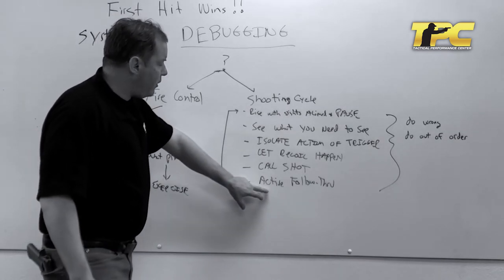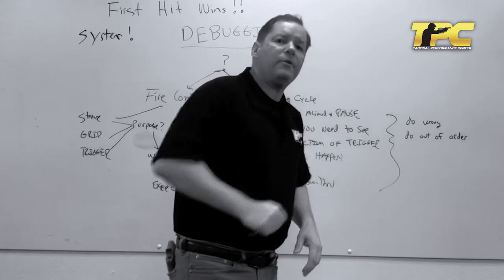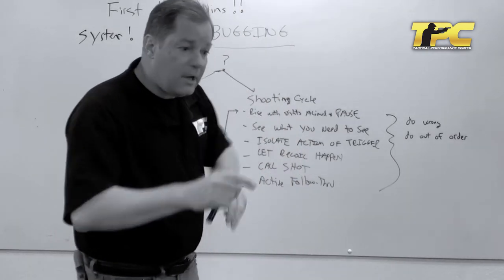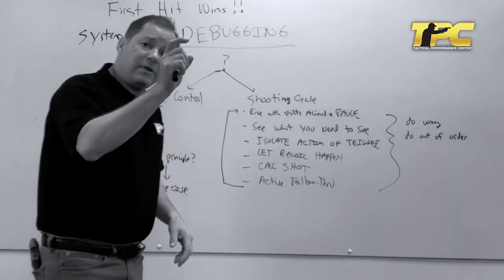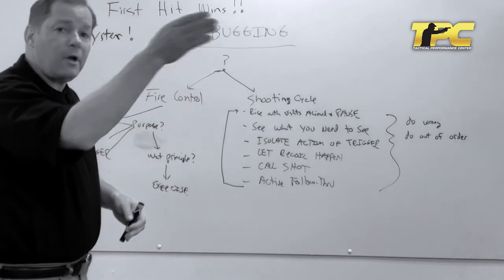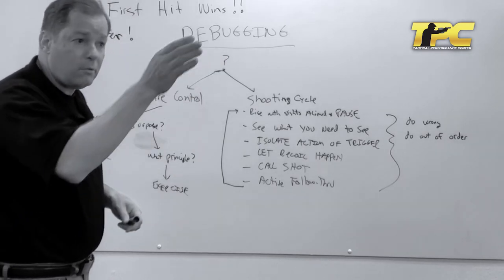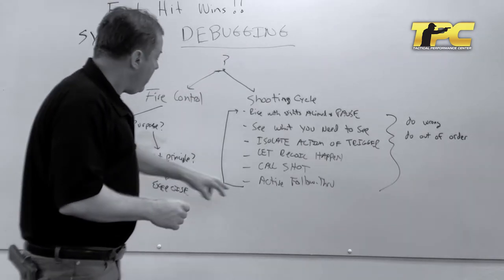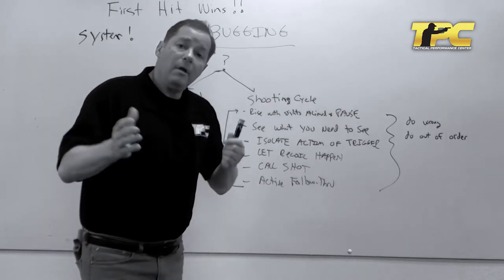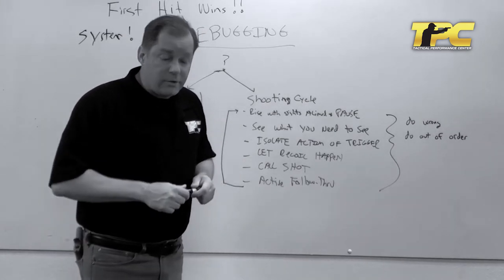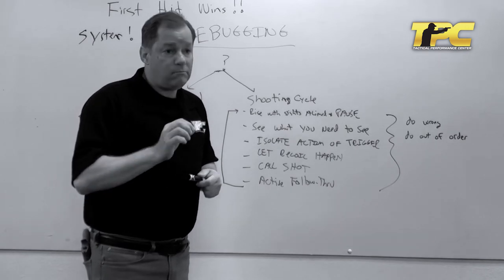So call the shot, and then we do the active part of the follow-through where we return the gun down to the target, we're picking up the sights again, and our trigger is being reset ready to fire while the gun is still in motion from the recoil or bringing it back. And then we repeat.